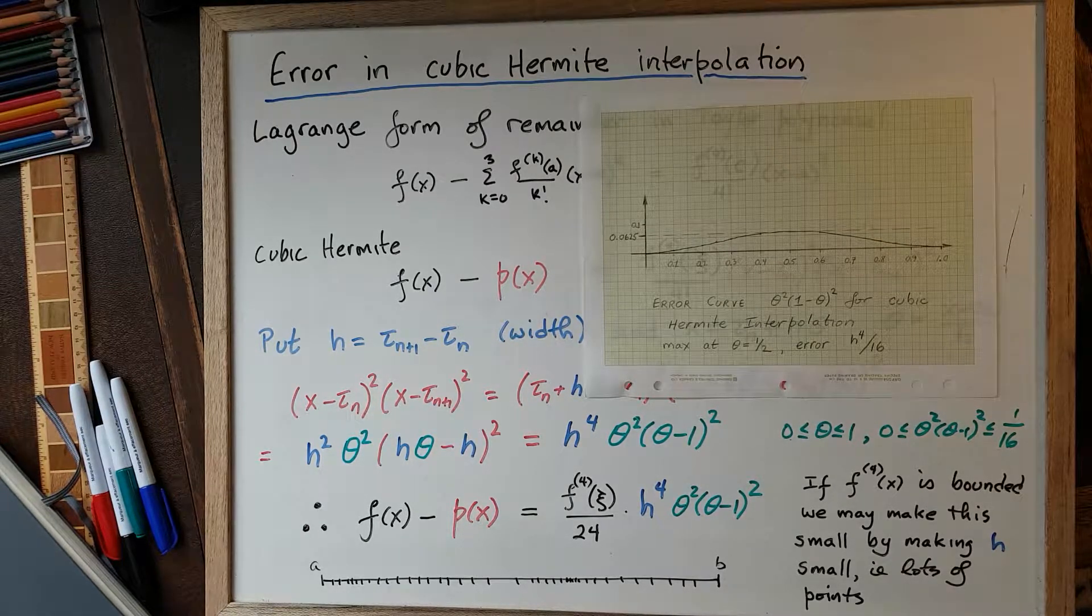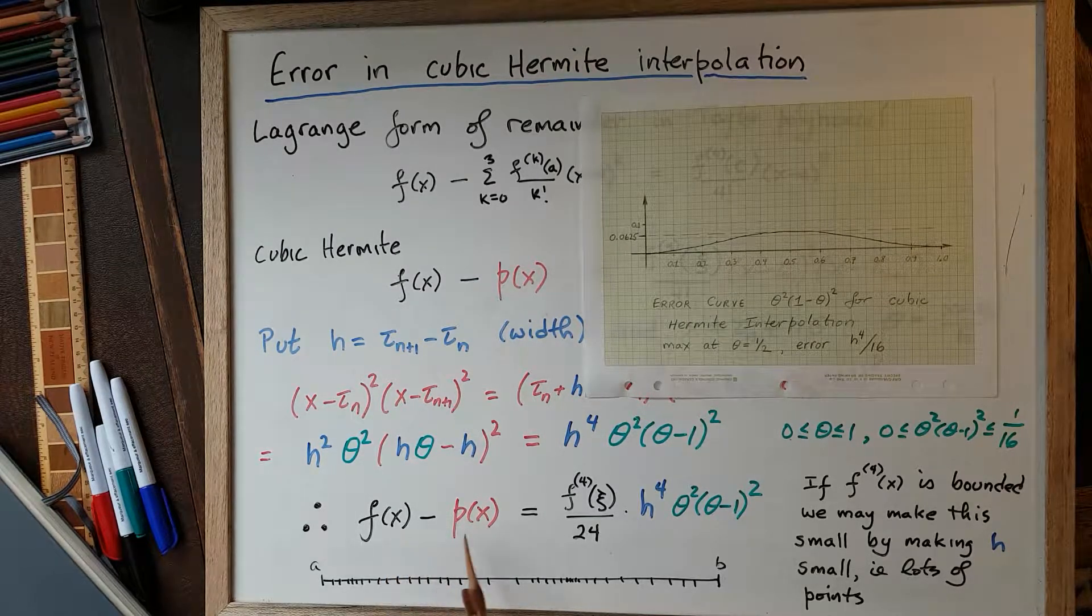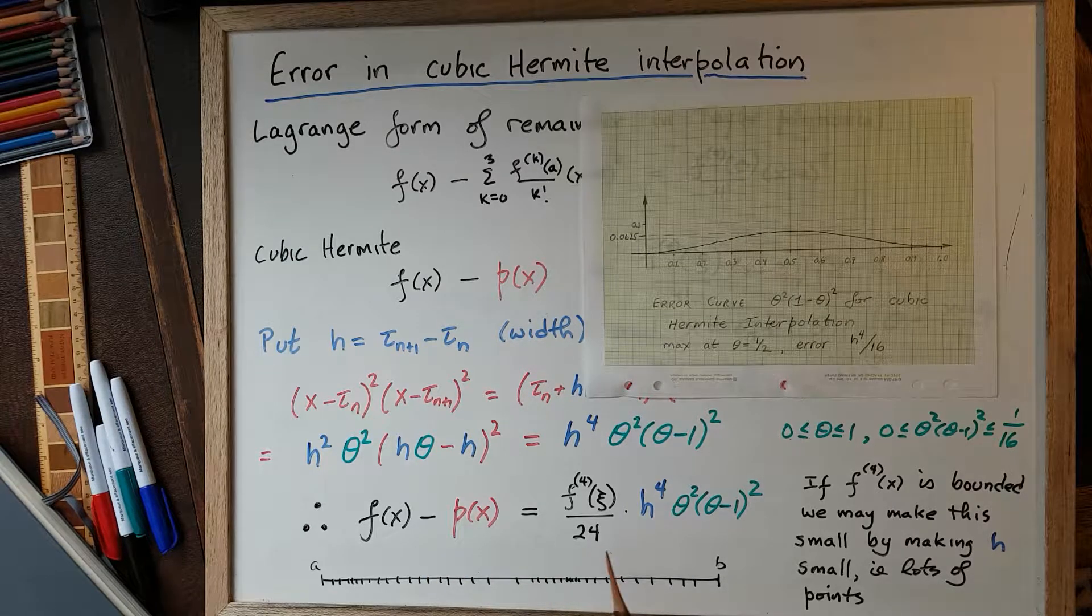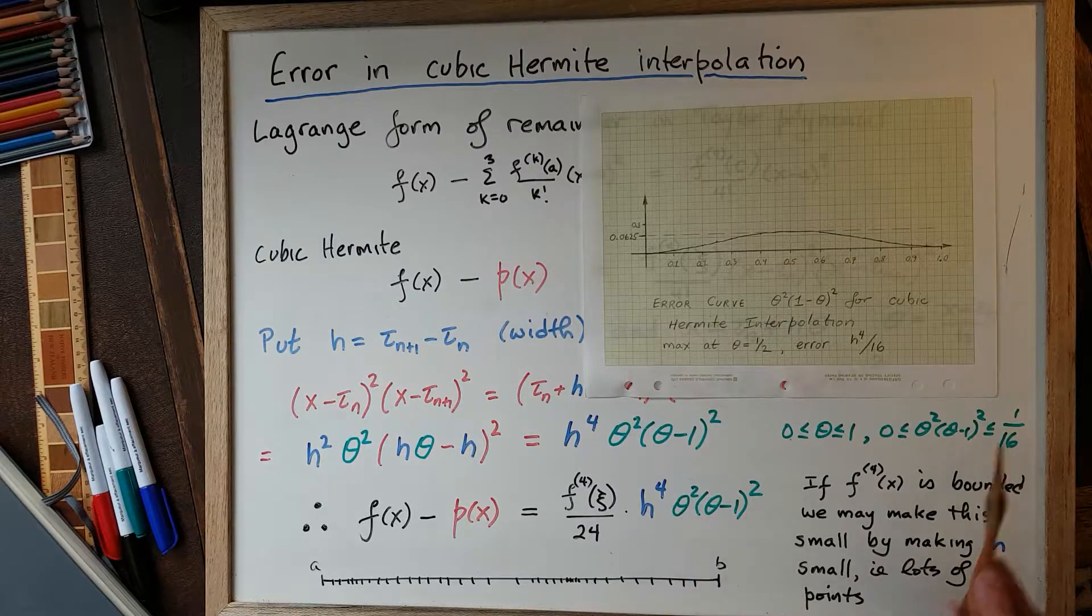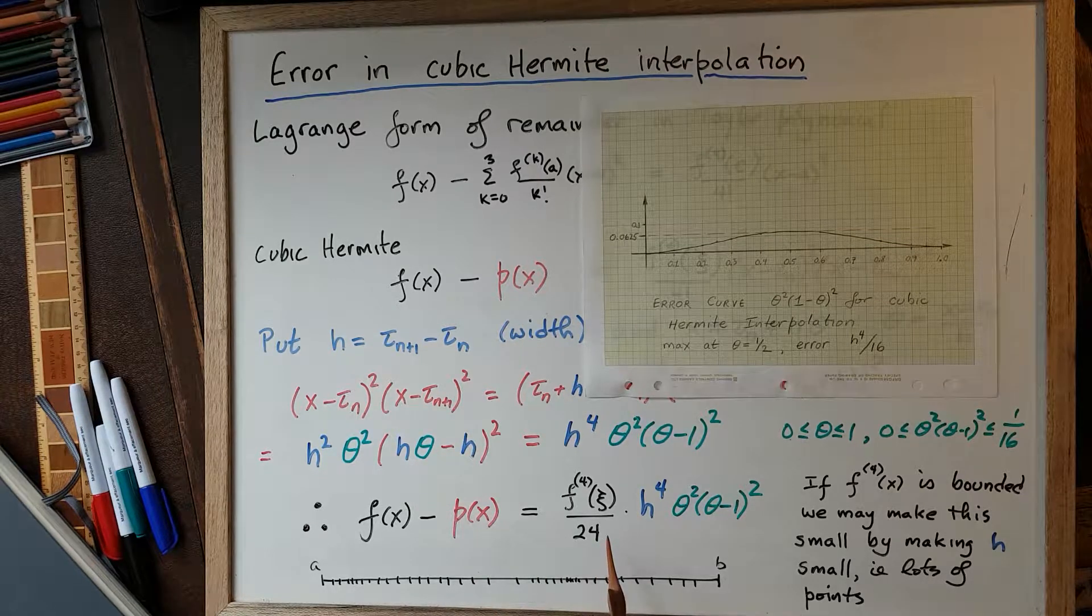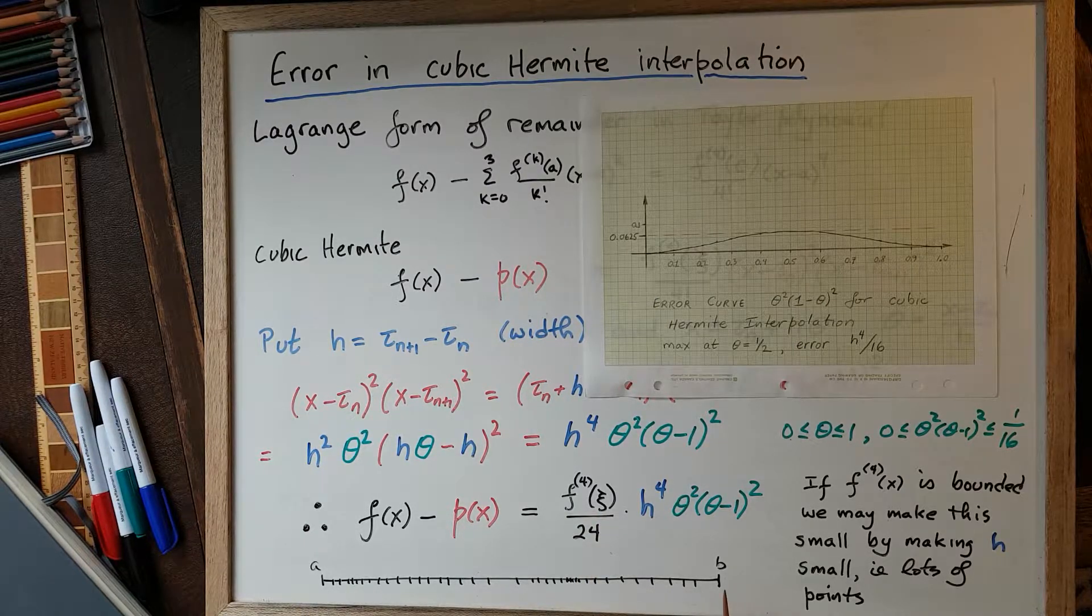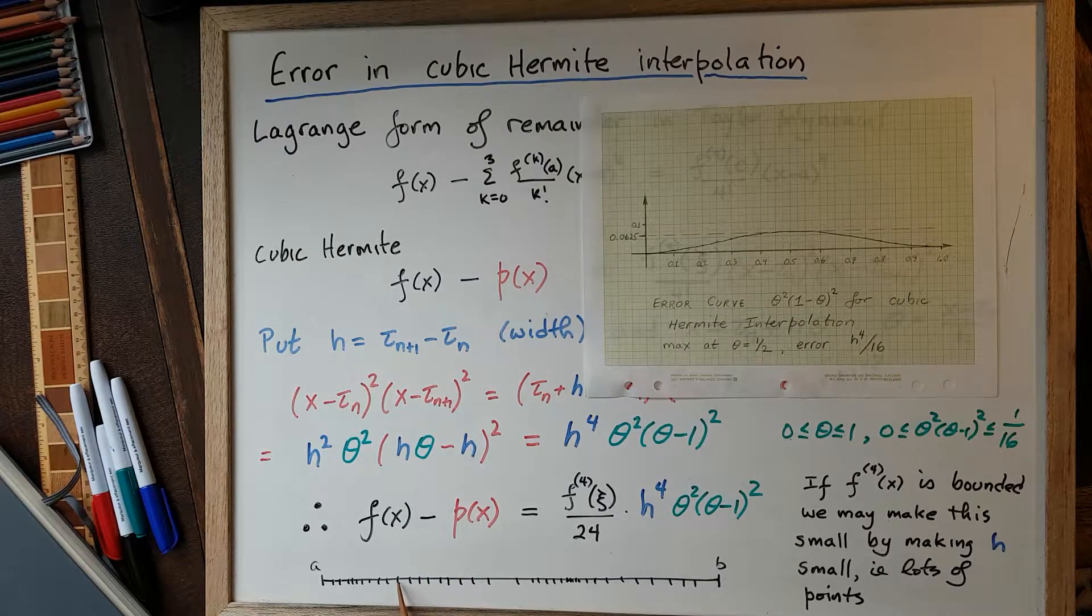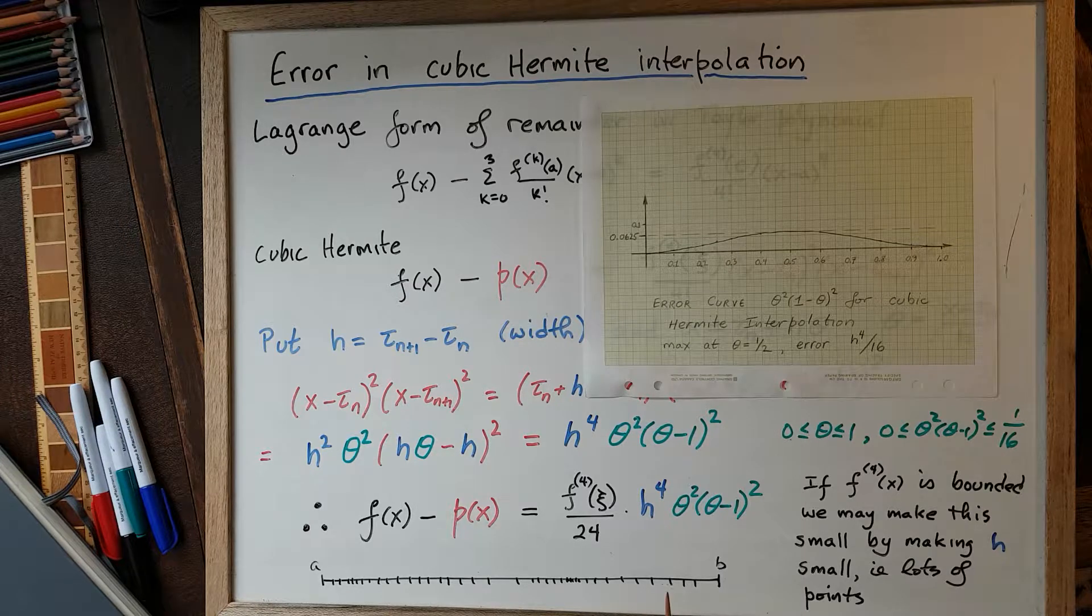And the h to the power of 4 is going to give us a very powerful way to find ways of approximating arbitrary functions. And so just putting this all together, the difference between f(x) and p(x) is f^(4) evaluated at some point C between τ_n and τ_{n+1} divided by 24 times h to the power of 4 times this thing, which is less than or equal to 1/16th. If the 4th derivative of the function is bounded over an entire interval, then we can make the difference between f and a piecewise cubic by choosing the pieces small enough so that on each piece, the factor h to the power of 4 is small enough that the error overall is small.